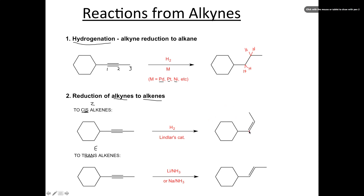In the cis example, we've added two hydrogens that are on the same side. Remember we don't have to show the hydrogens, but we do have to clearly indicate that our alkene is now cis. The trans alkene uses a different set of reagents — you can either use lithium in ammonia or sodium in ammonia. That will make our alkyne into a trans alkene. We have three carbons: carbon 1, 2, 3, and now we've added two hydrogens. These hydrogens are on opposite sides of each other and we have our trans alkene.